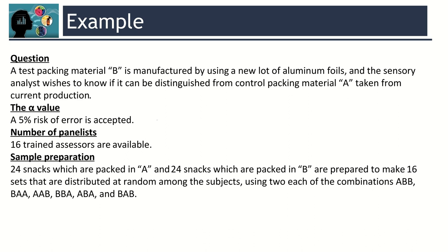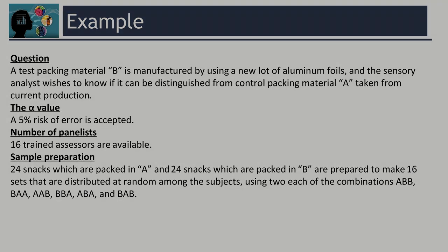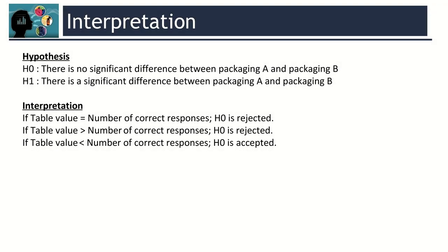The alpha value is 5% and the number of panelists is 16 trained assessors. For the sample preparation, 24 snacks packed in A and 24 snacks packed in B are prepared to make 16 sets that are distributed at random among the subjects. The null hypothesis H0 is: there is no significant difference between packaging A and packaging B. The alternative hypothesis H1 is: there is a significant difference between packaging A and packaging B.